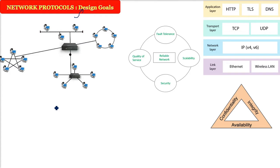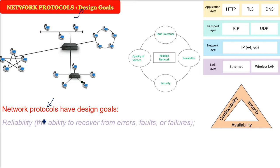Network protocols - a protocol is all about the agreement between two parties on what rules and regulations they have to follow. The first design aspect is reliability: if a link is broken or a device has failed, the whole network should be able to recover from any kind of error, faults, and failures.